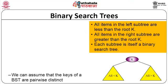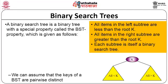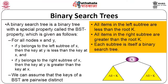A binary search tree is itself a binary tree, but with a special property called the BST property: for all nodes x and y, if y belongs to the left subtree of x, then the key at y is less than the key of x. This is true for every single node of the binary search tree. We assume that keys are pairwise distinct.